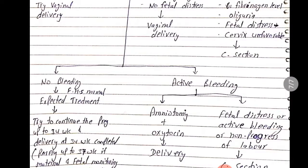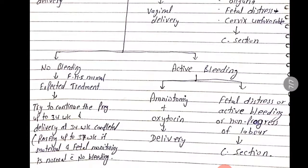If bleeding is not active and fetal heart sound is normal, admit the patient to the hospital and provide expectant treatment. Try to continue the pregnancy until 34 weeks is completed, after which delivery will be done. If the condition allows, continue maternal and fetal monitoring up to 37 weeks.